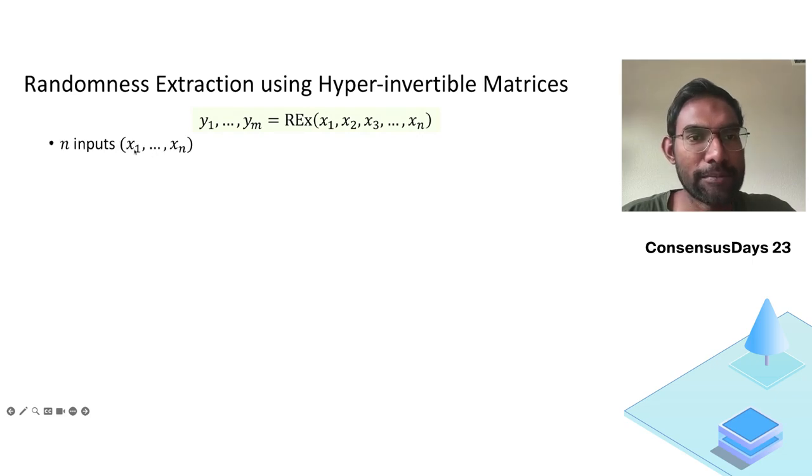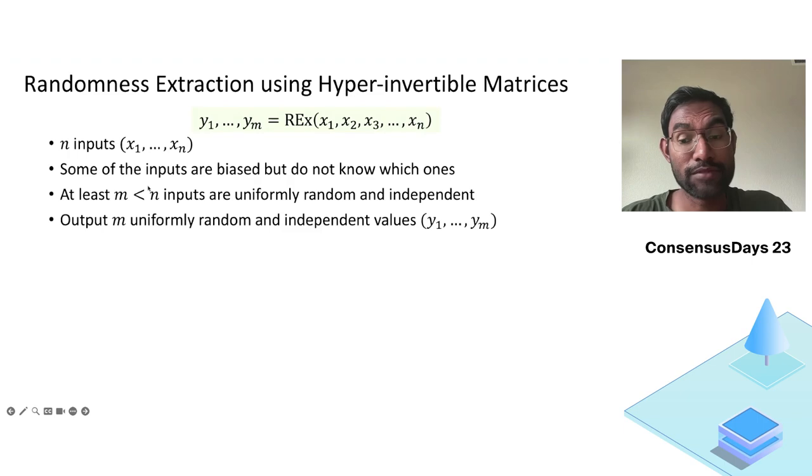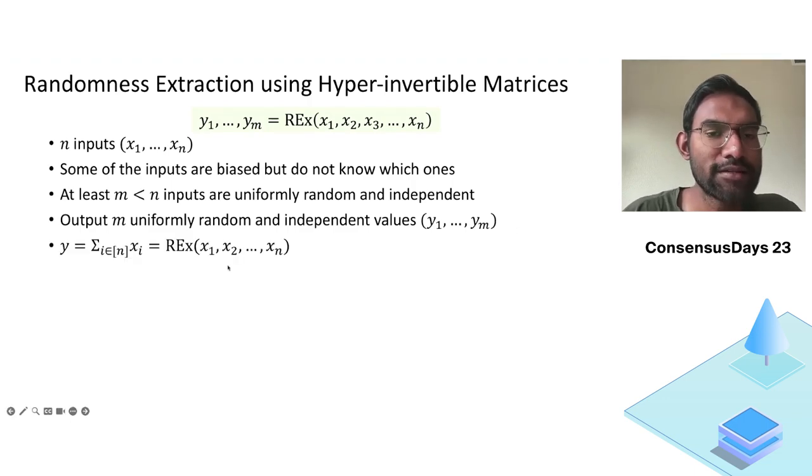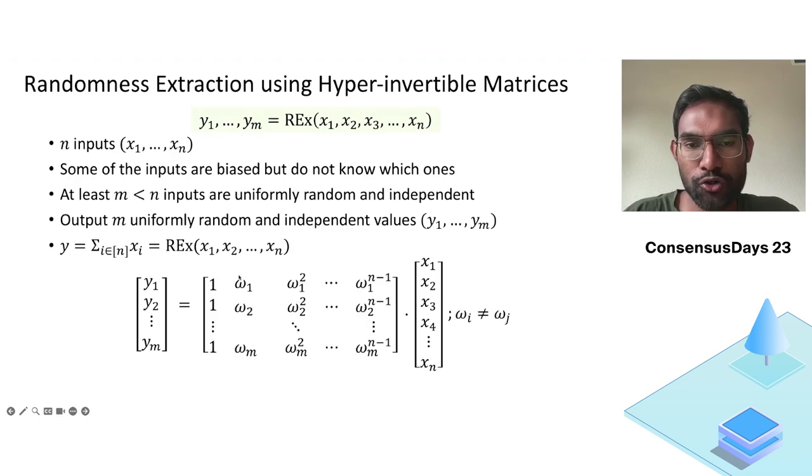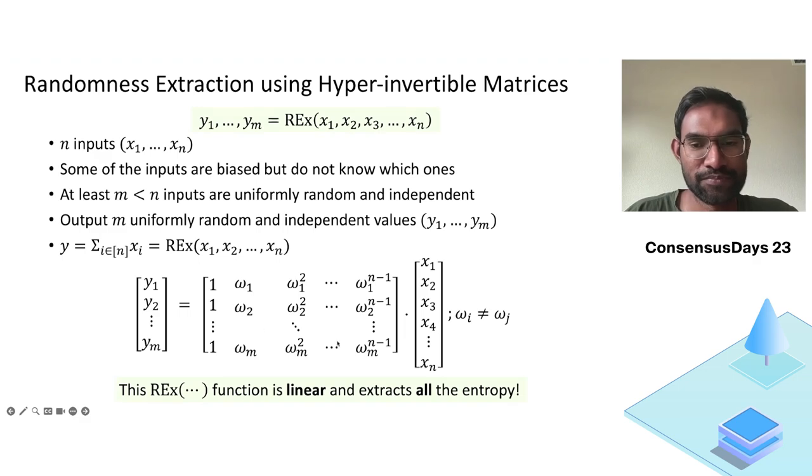So randomness extraction is a function that has n inputs x1 to xn, and some of the inputs are biased but you don't know which ones are biased. But what you know is that at least m of these inputs are informally random and independent. And what you want, you want to output m uniformly random values, let's say y1 up to ym. So one simple example of randomness extraction that you might have seen is simple summation. If you have a bunch of values, some of which are random, you just add them, you get a uniform random value. But we want to do better. This is a technique from TCC08 where you take the input and represent them as a vector. And what you do, you multiply this vector using a Vandermonde matrix. And what you get is y1 up to ym. And they argue that these are uniformly random and independent. This randomness extraction has very nice properties. One is this function is linear. And it extracts all the entropy. If you have m uniformly random values, you output m uniformly random outputs.